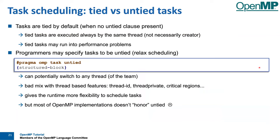Tied versus untied — this is special to how OpenMP works. A tied task is always executed by the same thread: it doesn't have to be the creator, but once a thread has started executing that task, it will finish it until its very end. The opposite is an untied task, where a task can start execution on one thread, and after being suspended and picked up again, it can continue on a different thread.